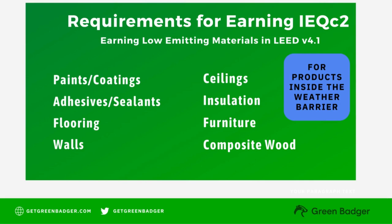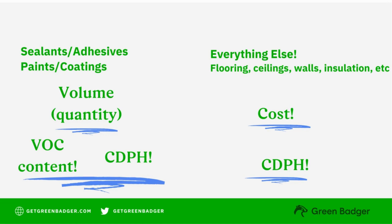For adhesives, sealants, paints, and coatings, three pieces of information must be provided: the quantity used shown in volume, the VOC content (VOC stands for volatile organic content), and an emissions certificate that shows CDPH compliance. CDPH stands for the California Department of Public Health. All the other categories are tracked by cost and only need to meet the CDPH compliance shown on the emission certificate.